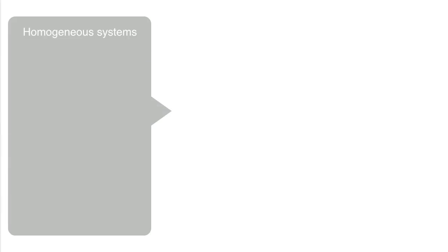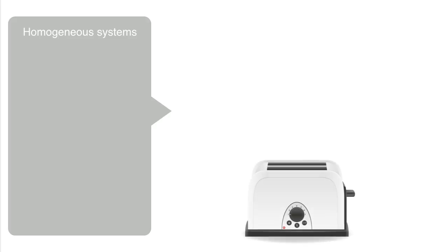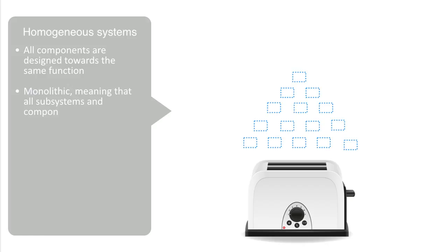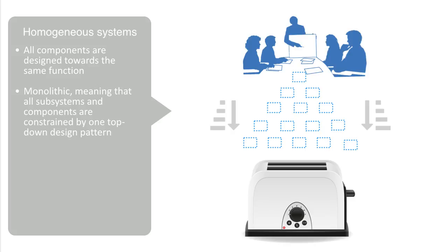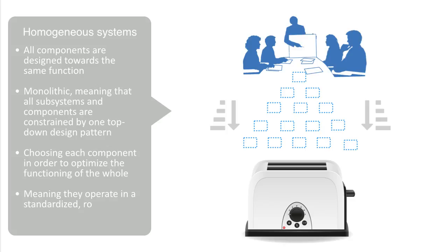Linear systems are homogeneous, meaning the system performs one single function, and all components are designed towards that same function. Our toaster makes toast — you can't use it to cook omelettes or make telephone calls. A corollary to this is that these systems are monolithic, meaning all subsystems and components are constrained by one top-down design pattern. Individual components have a well-defined function governed by the system's overall design. One engineering team designed our toaster, choosing each component to optimize the functioning of the whole. Because of this, these simple engineered systems are well-defined and expected to be well-behaved — operating in a standardized, routine, and predictable fashion.